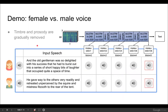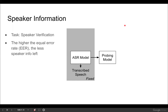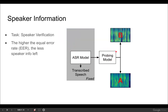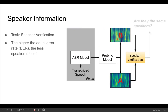We can directly hear from the synthesized speech that timbre and prosody of the speaker are gradually removed as the layer goes deeper, demonstrating that our probing model provides a more intuitive way of explaining known behavior of neural ASR models. We performed speaker verification experiments on the generated speech to quantify loss of speaker information in the ASR hidden states. For speakers A and B, we feed them into the pipeline of ASR model and probing model, generate the recovered spectrogram, then feed it into a speaker verification model and ask: are they the same speakers? The higher the equal error rate, the less speaker information is left in the hidden states.